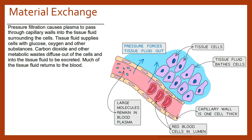From the tissue fluid, these substances can make their way into the body cells. Body cells use these substances for their chemical reactions and day-to-day activities, so they then need to get rid of their metabolic waste — things like carbon dioxide — which will diffuse out of the cells into the tissue fluid and then into the blood plasma.